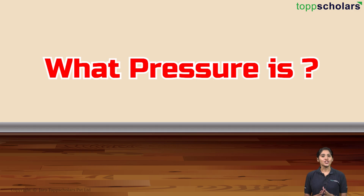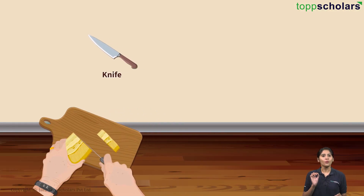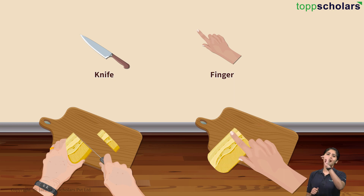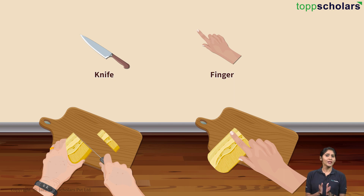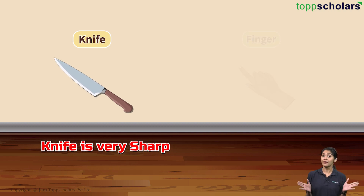To understand pressure, let's take a look at some more examples from our day-to-day life. If you want to cut a bread, you can easily do that by using a knife. But what if you used a finger instead and put the same force? Now you can't cut it. But why? Even though you're putting the same force as before, why can't you cut it this time? Well, you might think that a knife is very sharp and our fingers aren't.